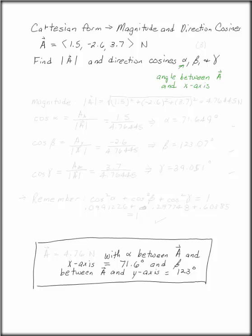Beta is the angle between A and the y-axis, and gamma is the angle between A and the z-axis.